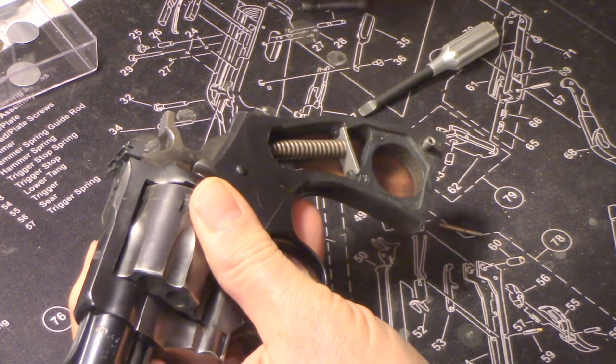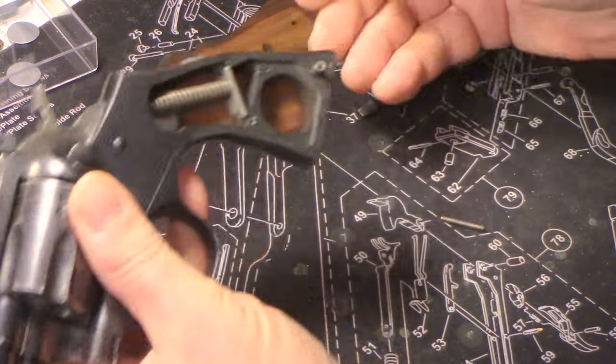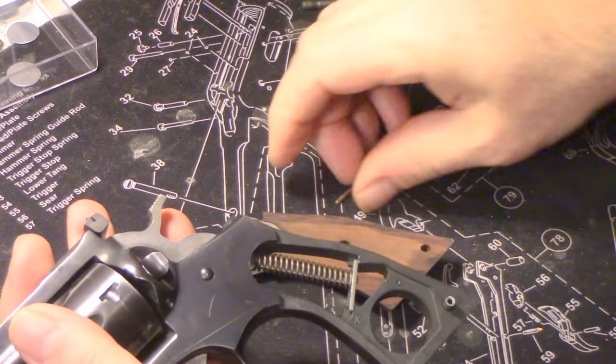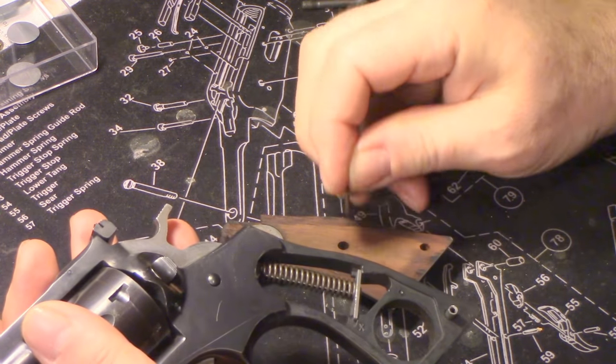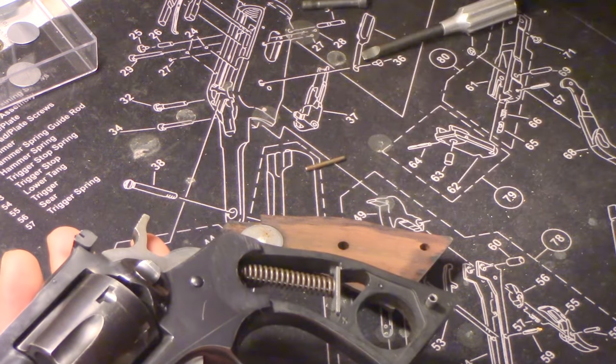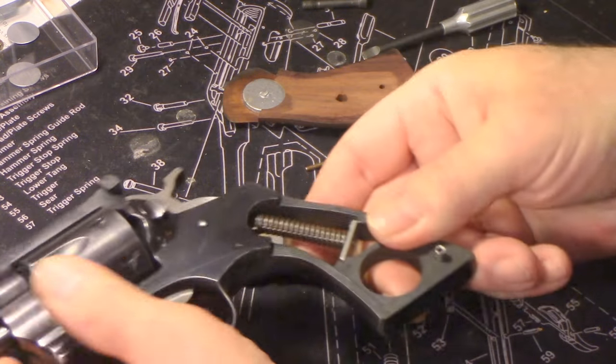Now the little pin was inside the handle there, it fell out on the table. I'll show that to you later. That's necessary and it's included with the grips. You can see that little hole over there that it goes into.